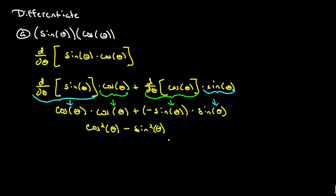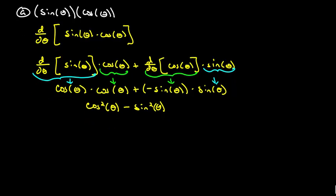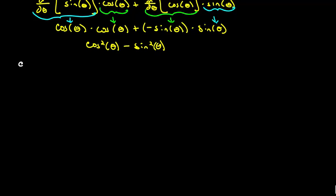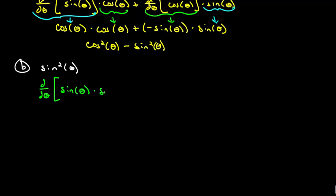Okay, let's go ahead and work on part B. Part B says we need to differentiate sine squared theta. This is really sine theta times sine theta. So what we need to do is differentiate with respect to theta: sine theta times sine theta. Again, we've got a product, so we'll use the product rule.